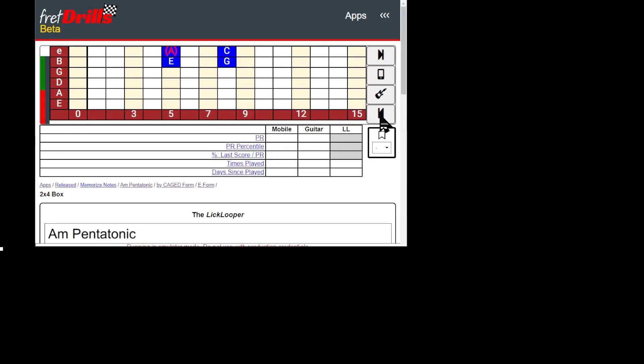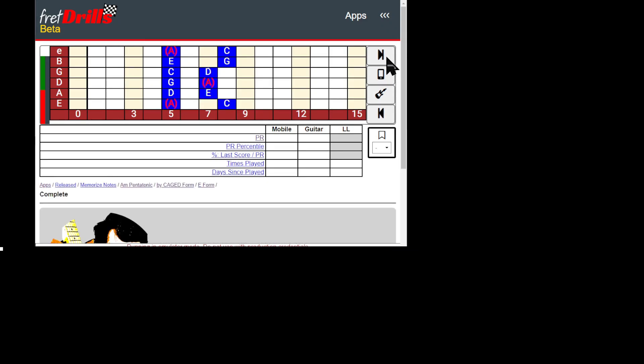Then we apply the 3x3 and 2x4 boxes to the various caged forms. First the entire E form, then the D form, C form, A form, and G forms. Then we conclude by testing over the entire fretboard.